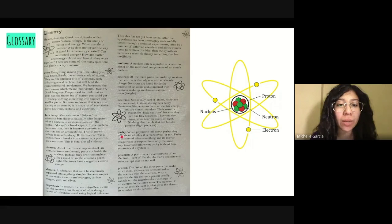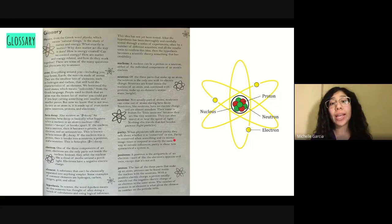Now parity. When physicists talk about parity, they talk about whether it is conserved or not. Parity is conserved when something in its mirror image react or respond in exactly the same way to outside influences. Parity is about how symmetrical a system is. Okay, that's a bit confusing. I get it.